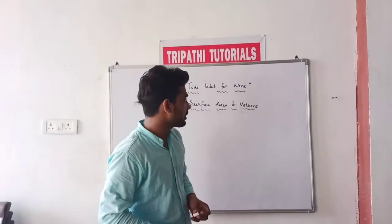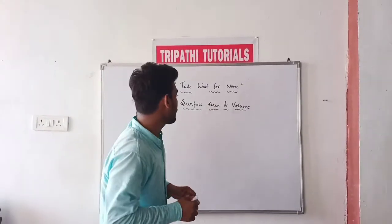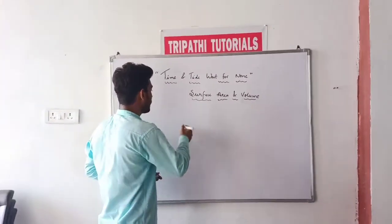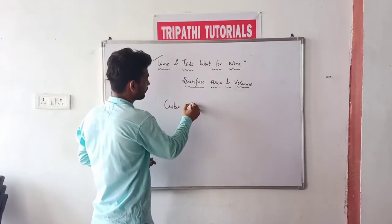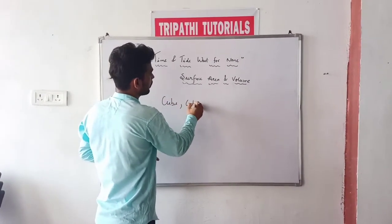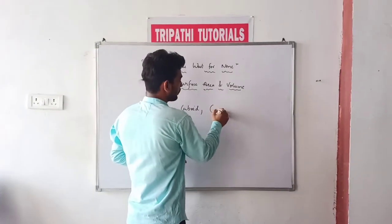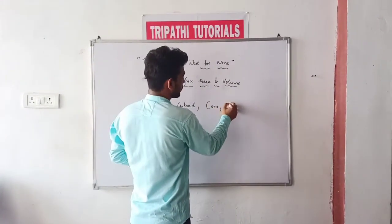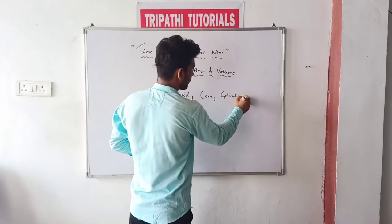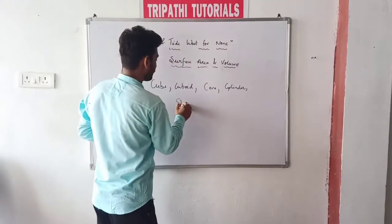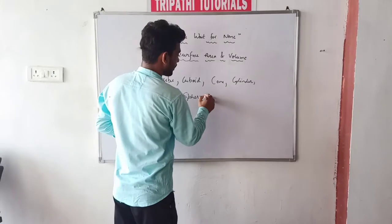We will discuss about many figures, many 3D shapes in this chapter. Like Cube, Cuboid, Cone, Cylinder, Sphere, and Hemisphere.